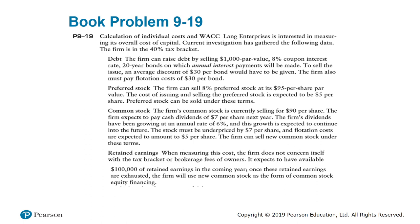Now we will start to calculate the cost of capital. To calculate the first source of capital, which is debt — the cost of debt. The firm can raise debt by selling $1,000 par value, 8% coupon interest rate, 20-year bonds on which annual interest payments will be made. To sell the issue, an average discount of $30 per bond would have to be given. The firm must also pay flotation costs of $30 per bond. This gives us the cost of debt.